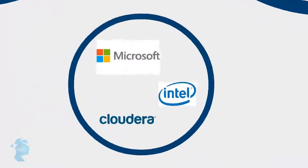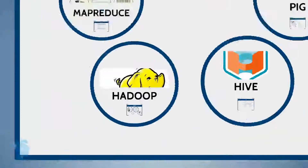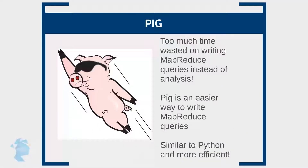Over time, other companies such as Microsoft, Intel, Cloudera, and EMC created their own versions of Hadoop and offer customized solutions on these platforms. As Hadoop began to be implemented on a larger scale, big data specialists soon realized they were wasting far too much time writing MapReduce queries rather than actually analyzing data. MapReduce was long and time-consuming to write, so developers at Yahoo came out with a workaround: Pig.